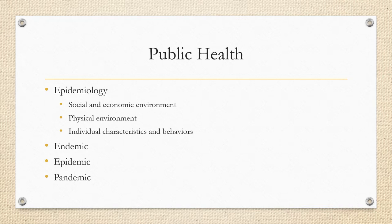Disease outbreak refers to clusters of disease pockets that are statistically higher than expected. An endemic disease is consistently present in a geographical location where few may be affected but it's not entirely eradicated. An epidemic occurs when a disease exceeds the normal number of cases — examples include cholera and typhoid fever, and COVID-19 in the United States. A pandemic is a worldwide disease event.